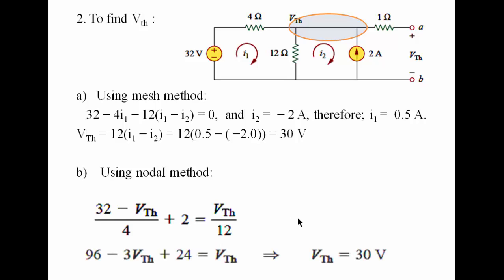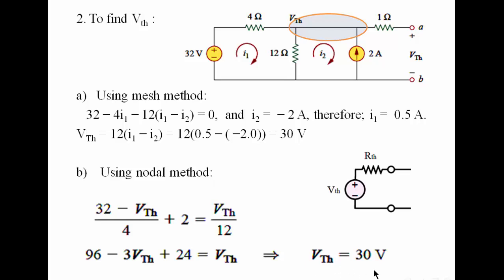And by solving, we get the value of V-Thevenin, which is 30 volts. So we obtain the same answer using the mesh method and the nodal method. Now we have the Thevenin's voltage and the Thevenin's equivalent resistance. Therefore, we can replace the entire circuit diagram with a voltage source and a series resistance. The value of V-Thevenin is 30 volts, and R-Thevenin is 4 ohms as obtained from the previous step.